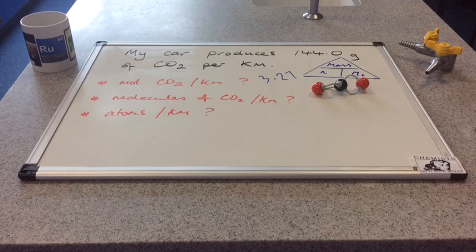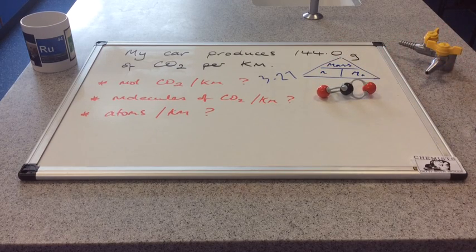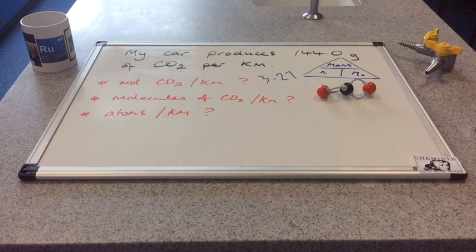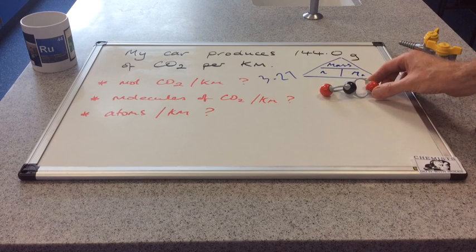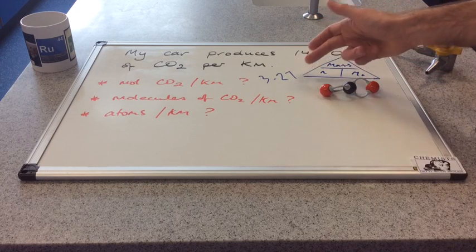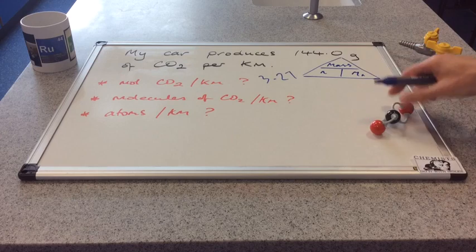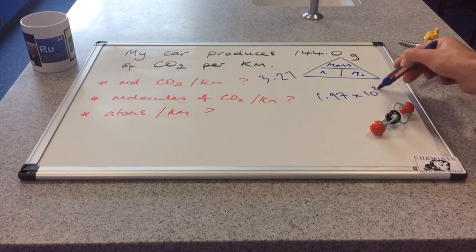How many molecules, how many of these things will we have coming out every kilometer? Well we've made 3.27 moles. One mole equates to Avogadro's number of molecules. So we're going to have the moles multiplied by Avogadro's number and that comes out at 1.97 times 10 to the 24.